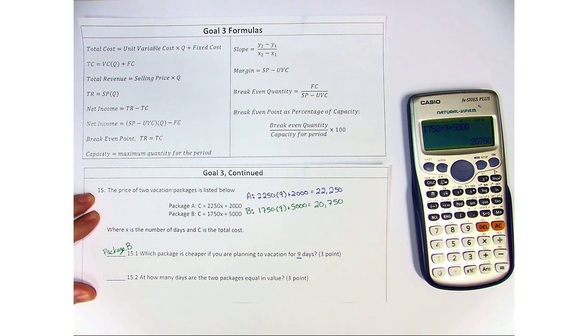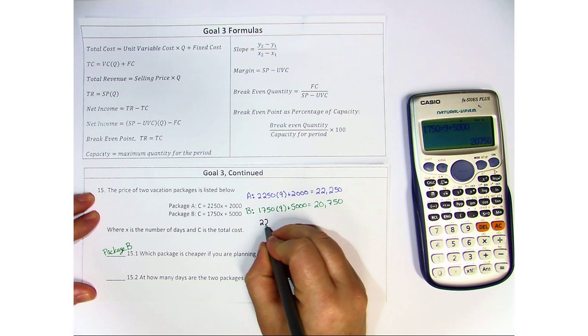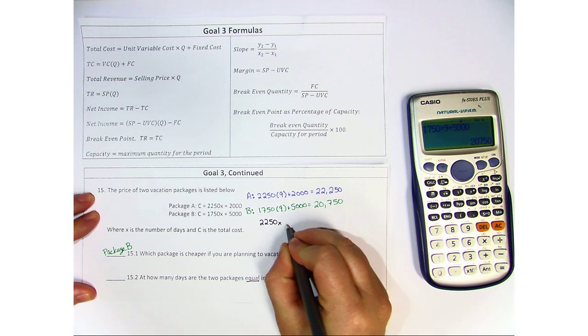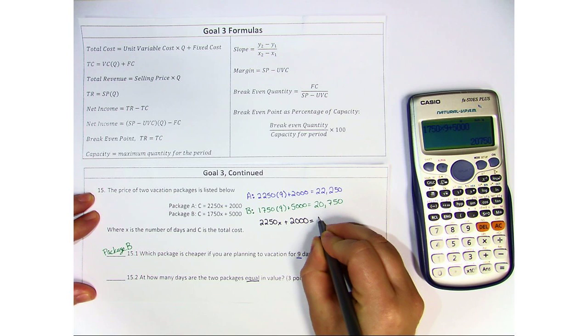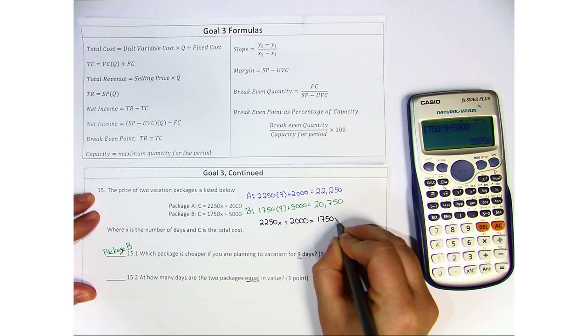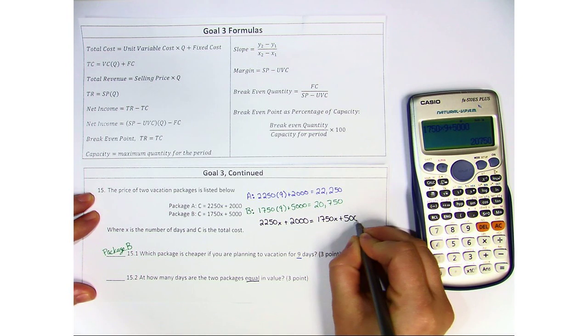Now the next question on 15.2 says, how many days are the two packages equal in value? Well, if you're wanting to know when they're equal, you make them equal. So 2250x plus 2000 equals 1750x plus 5000.